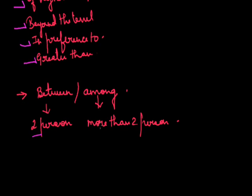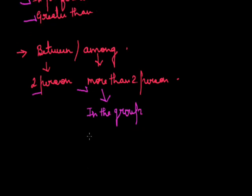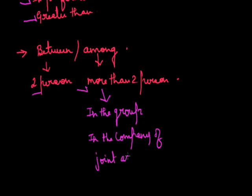The preposition 'among' indicates in the midst of or surrounded by. For example, 'There is a house among the trees.' It also indicates in a group: 'He stood first among the fastest runners of the country.' It can mean in the association or company of: 'Sonika left Delhi among a group of travelers.' By the joint action of: 'Among us, we will get the job done.' Or with a portion of each: 'Distribute this among you.'